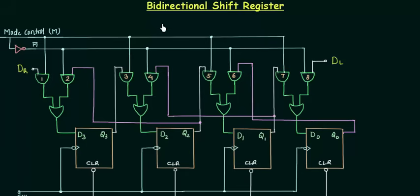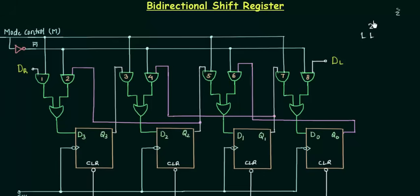In this lecture we will study bi-directional shift register, a very important topic. Before actually going to the circuit for the bi-directional shift register, let us take a 2-bit number 11. The decimal equivalent for 11 is 3, and if I write down the weight for the position, it should be 2 to the power 0, then 2 to the power 1, and then 2 to the power 2.